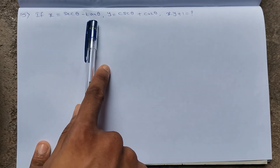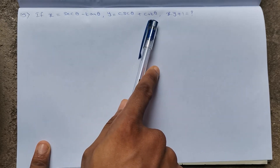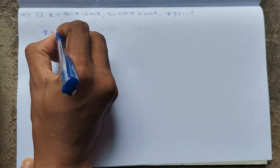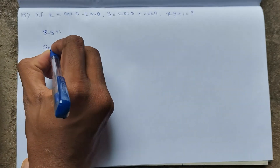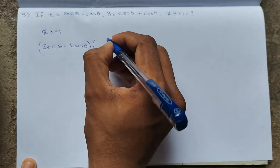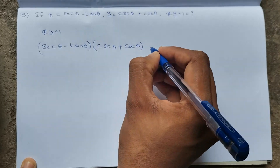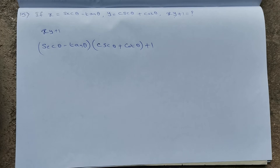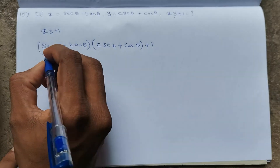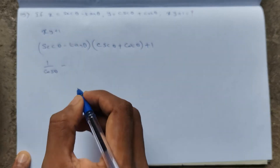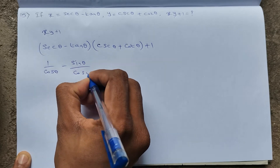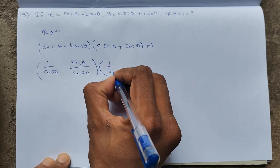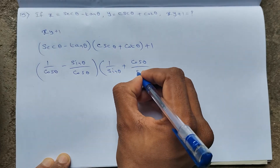Next question: X = secθ − tanθ, Y = cscθ + cotθ. Find XY + 1. So XY + 1 = (secθ − tanθ)(cscθ + cotθ) + 1. Rewriting: secθ = 1/cosθ, tanθ = sinθ/cosθ, cscθ = 1/sinθ, cotθ = cosθ/sinθ. This gives (1 − sinθ)/cosθ × (1 + cosθ)/sinθ + 1.